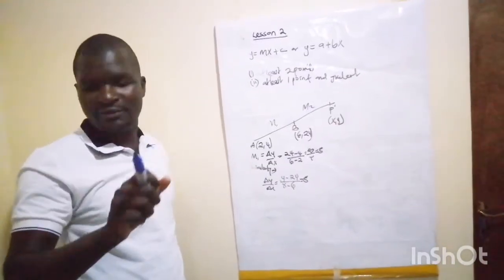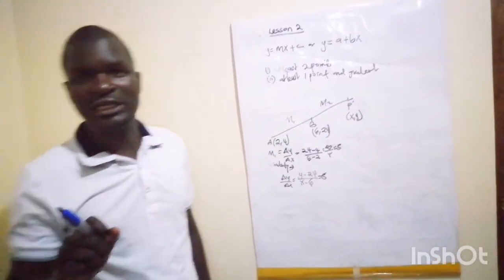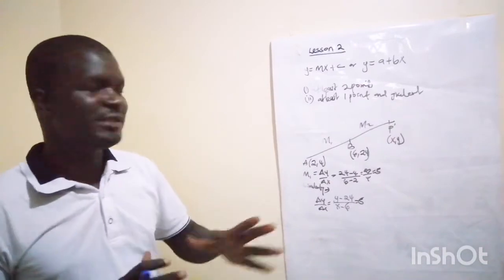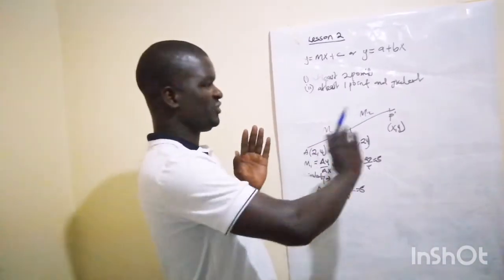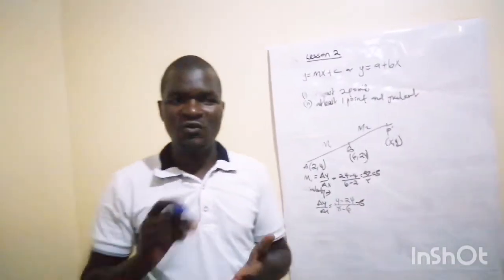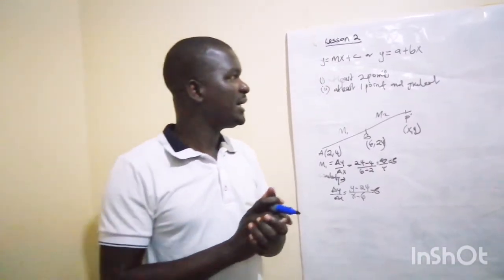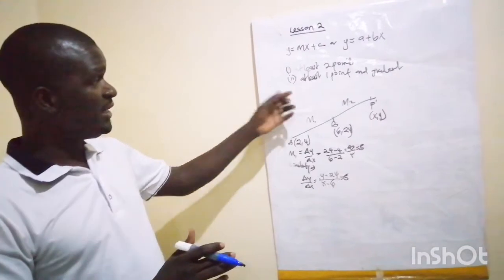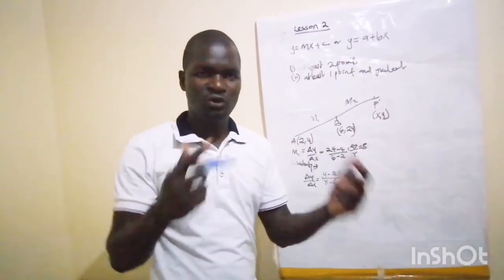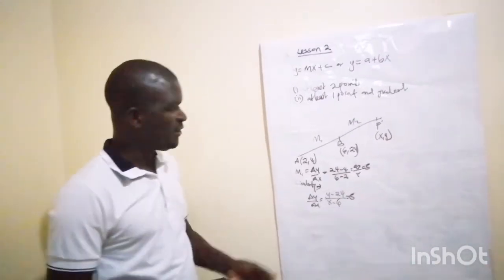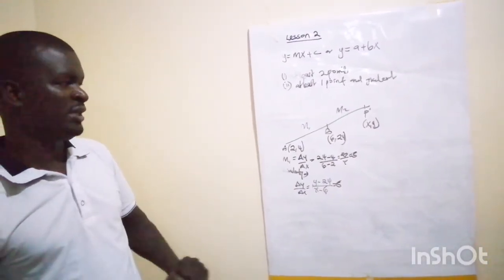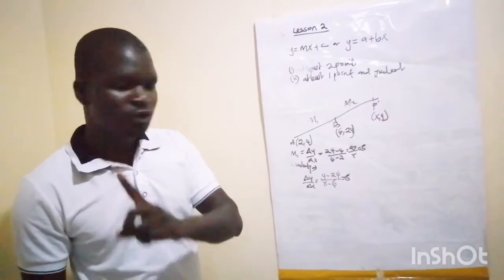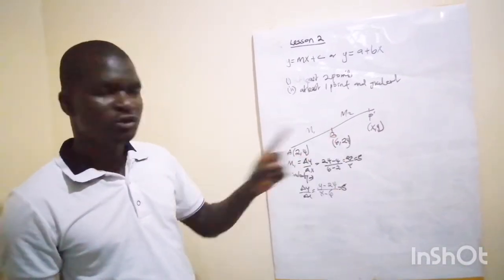The third property of straight lines is that they are completely defined. When given at least two points, you can determine the values of m and c, or a and b. For example, you can see in our illustration points A with coordinates (2, 4) and point B with coordinates (6, 24).